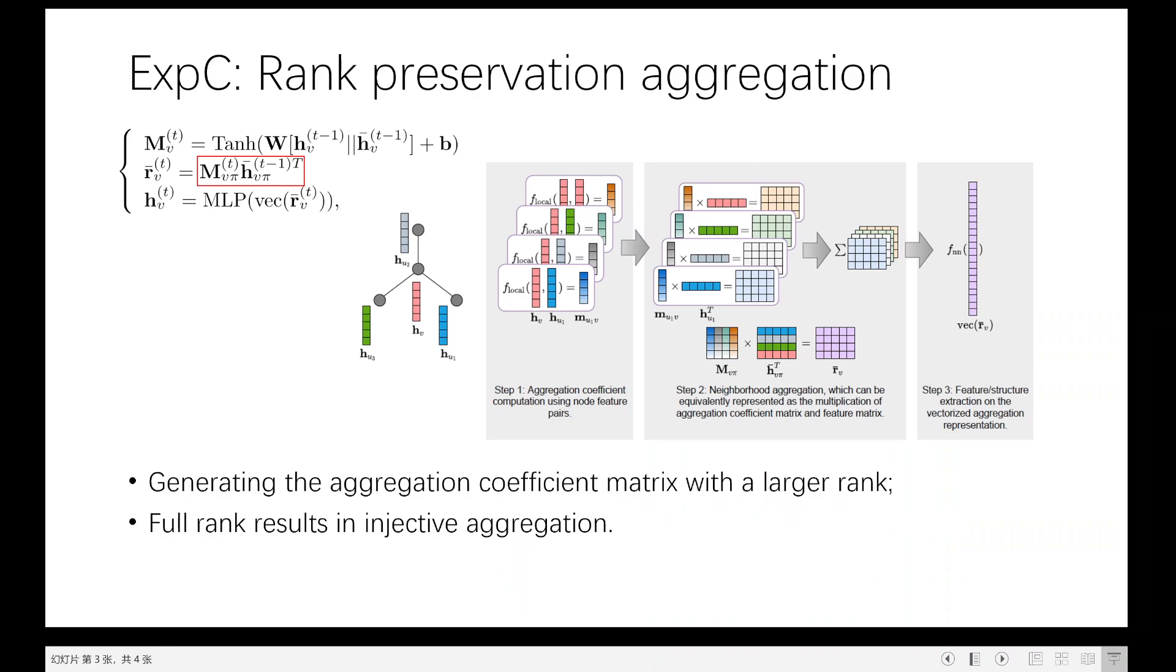By preserving the rank of the aggregation coefficient matrix, we can alleviate the information loss problem, as a result, achieving more powerful aggregations. In the aggregation coefficient computation step, we apply a larger dimension, instead of existing aggregations corresponding to one. And we use tanh to better preserve linear independence among different dimensions of the aggregation coefficient matrix.